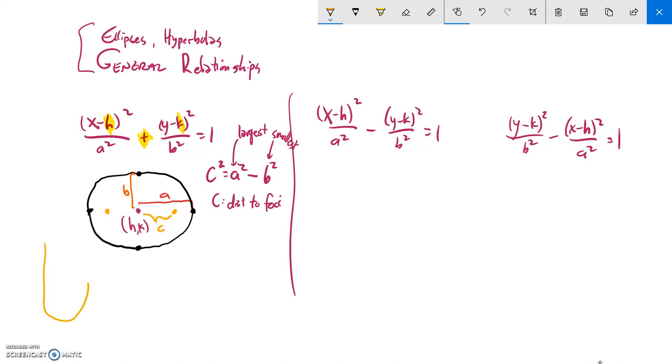Now, if my ellipse was this way, where the number that's underneath the y squared is bigger, my foci would be here and here. It's always along the major axis. So there's that relationship for ellipses.